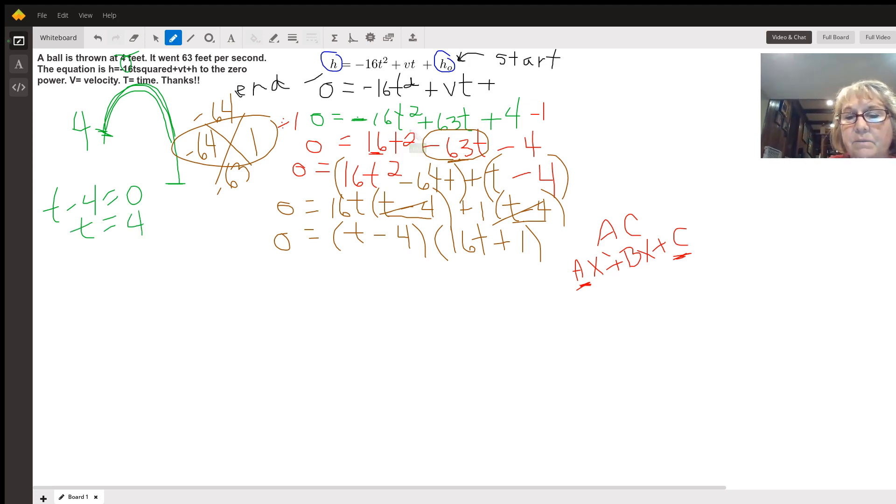The second possibility is the 16 T plus one. If I set that equal to zero, 16 T plus one equals zero. And if I subtract a one from both sides, I'm going to end up with 16 T equals a negative one. And when I divide by 16, T is going to be a negative number.